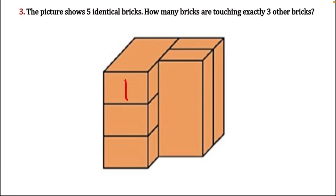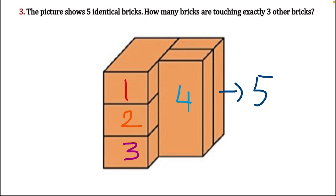First, we need to check how the bricks are placed. I have written brick numbers one, two, and three for the bricks that are stacked up — I'm using only one side. Brick number four and brick number five are next to them. Between four and five there is also one side, but this is actually the brick face because we are using three-dimensional pictures. Three bricks are stacked up on the left side and two bricks are placed exactly next to the stacked-up bricks.